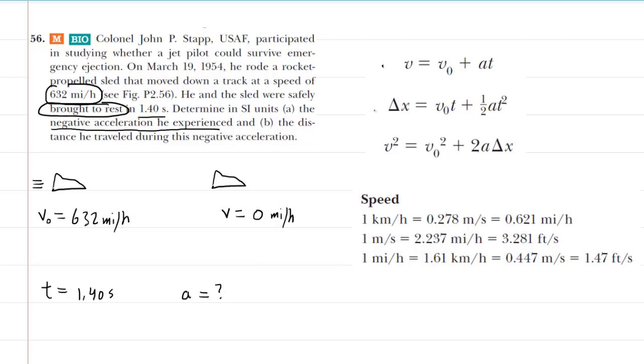So from the list of three kinematics equations here, we would want to pick the one that involves those four parameters. Notice that we do not yet concern ourselves with the displacement. So any equation that has delta x in it, we would neglect for the time being. That would leave us with this equation that we can use to find the acceleration.